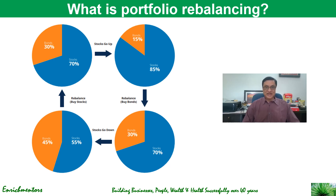That is not the end of the story. Over another six months or a year, stocks go down, and your stocks contribution drops to 55% while bonds remain at 45%. So you again need to rebalance by buying stocks and get it back to 70/30 again. This is what is called portfolio rebalancing.